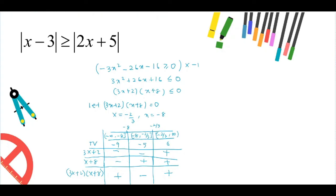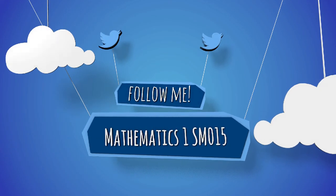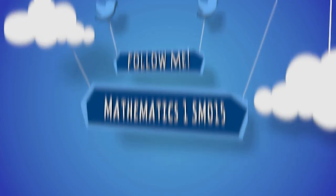We want to find the range value of x that makes the quadratic inequality less than 0. So we can say that x is between minus 8 and minus 2 over 3 inclusive.